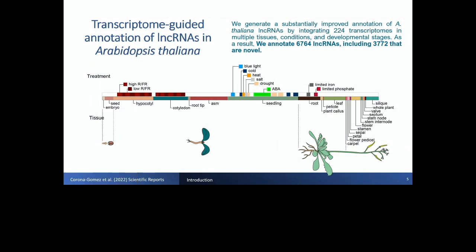The model of study in this talk is plants — specifically Arabidopsis thaliana, the model plant for studying. In previous work, we identified around 7,000 long non-coding RNAs in Arabidopsis thaliana, using a large number of transcripts to search for long non-coding RNAs in different tissues, developmental stages, and experimental conditions.